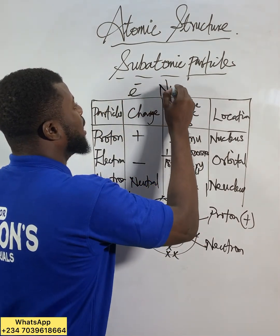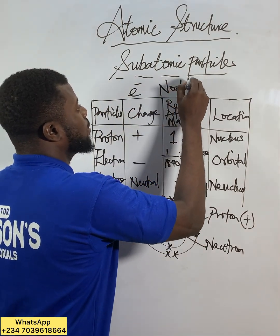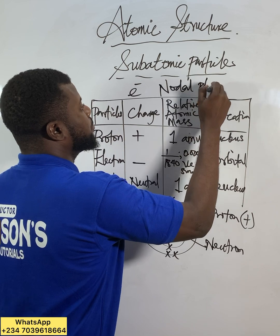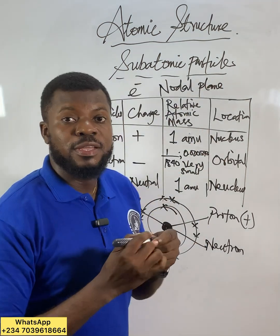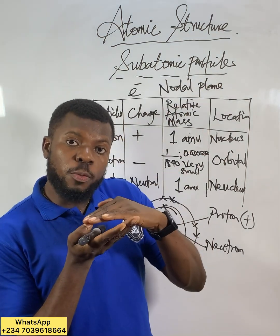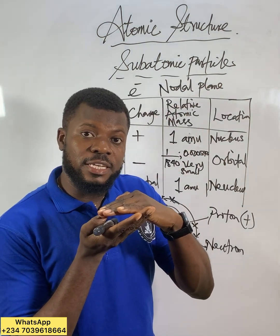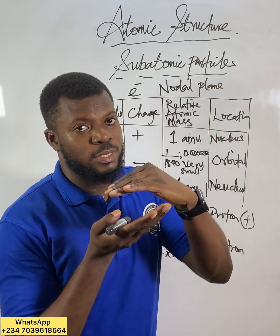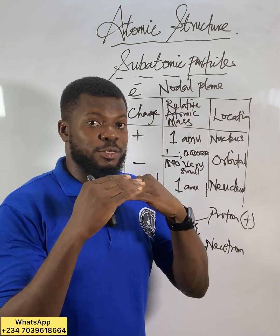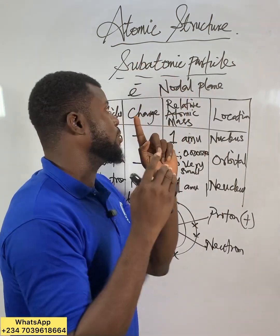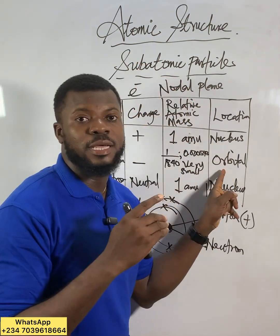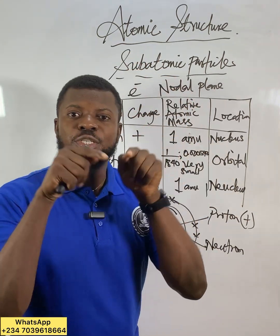The nodal plane is the region where there is a low possibility of finding electrons. We call that the nodal plane. The region in space where there is a high possibility of finding electrons we call the orbital.